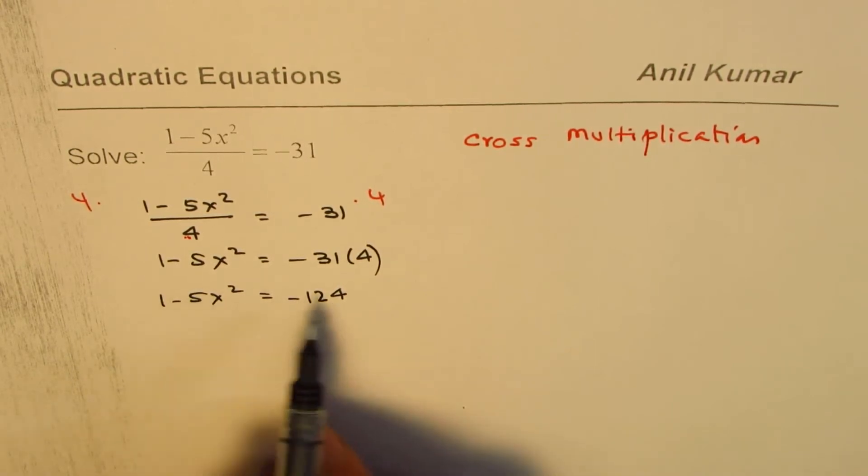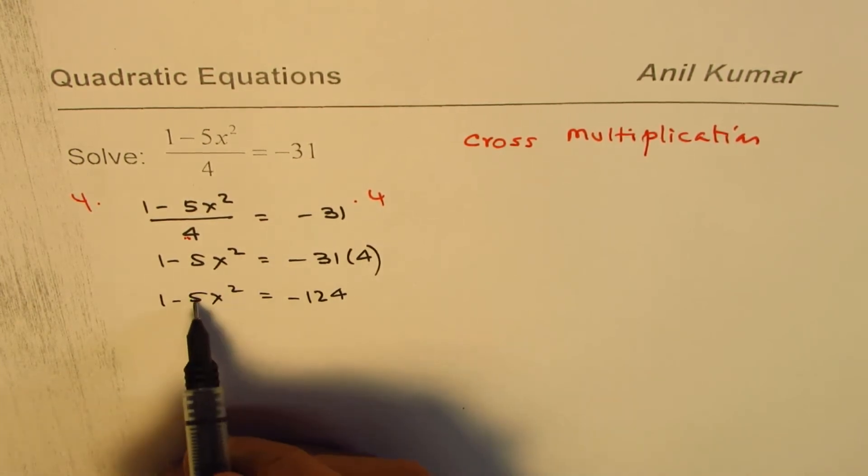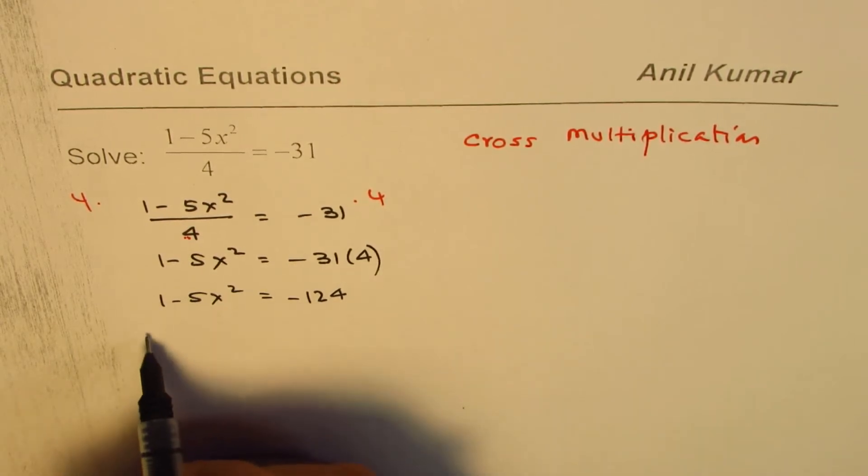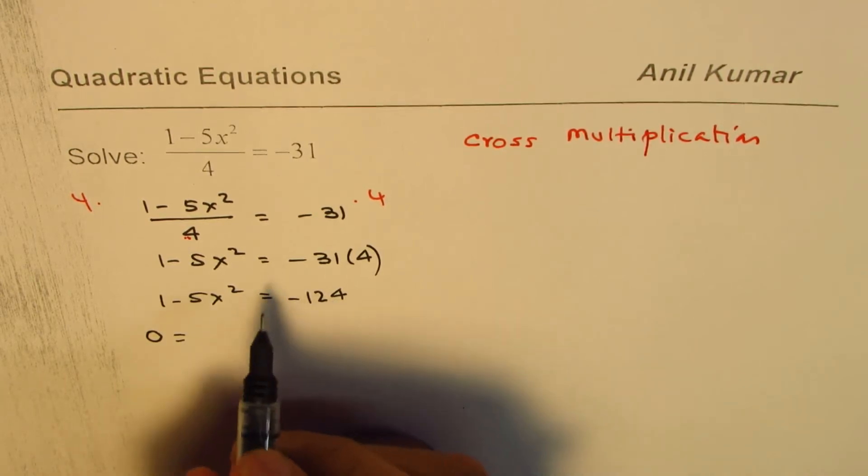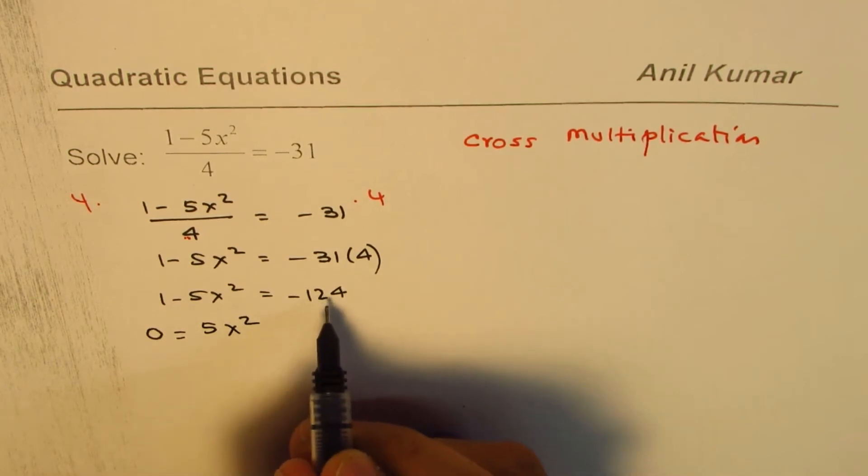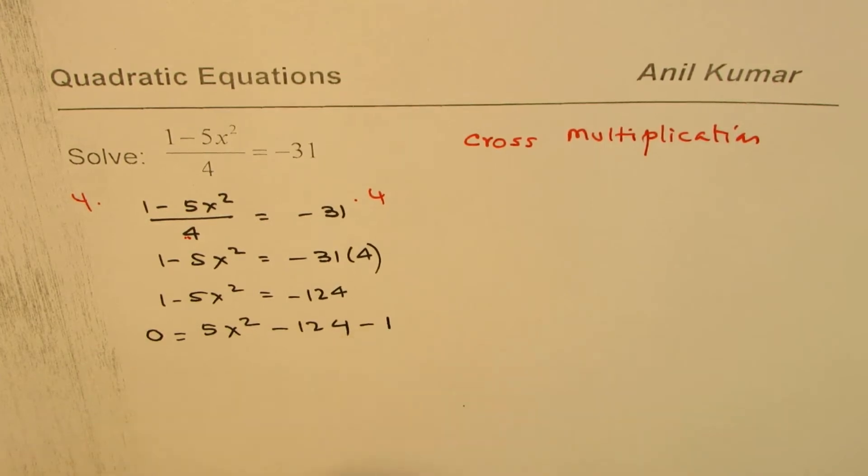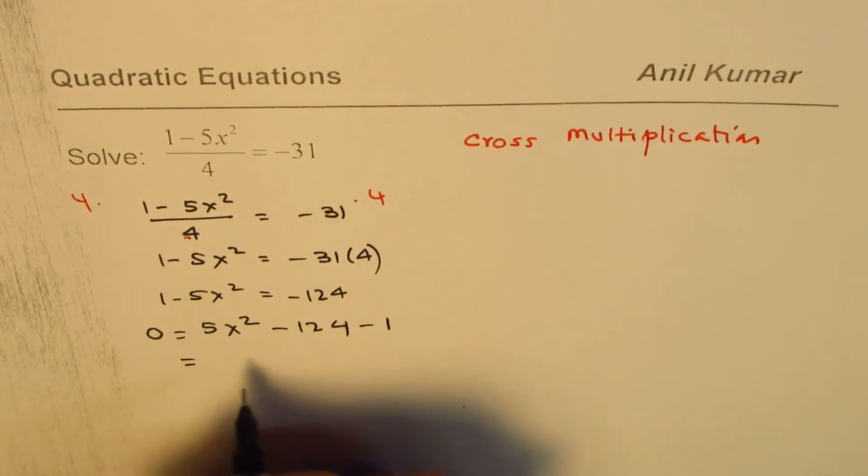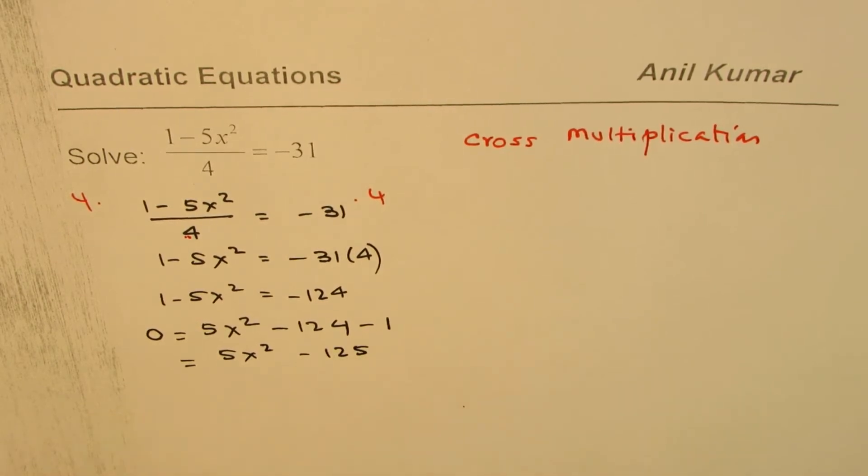Now you have to bring all the terms together to one side. What you should really ensure is keep the leading coefficient positive. So we bring this term to the right side. So we're left with 0 here, bringing all of them to the right side. Writing them in proper order is important - highest degree first. So we'll get 5x squared, we already have minus 124, and we'll write minus 1 here. That gives you 5x squared minus 125 as your quadratic equation equal to 0.